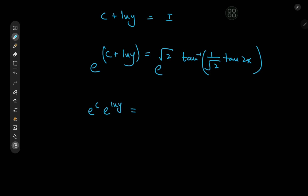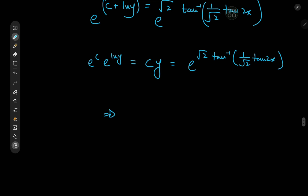Exponentiating everything: e^c times e^(log y) equals e to the right-hand side. e^c is just another constant C, and e^(log y) is just y. So y = C · e^(√2 · arctan(1/√2 · tan(2x))).